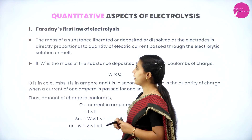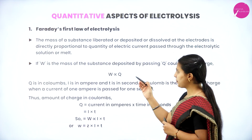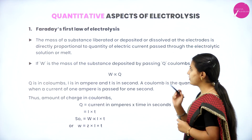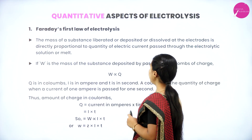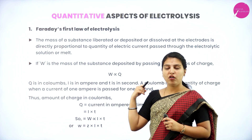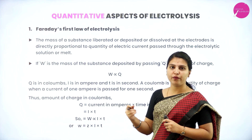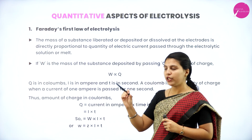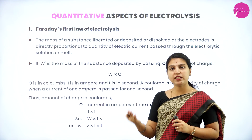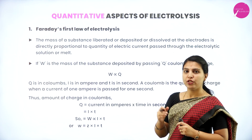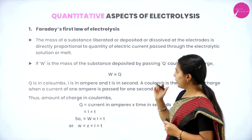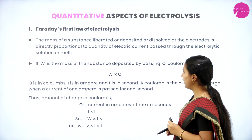Faraday's first law of electrolysis: The mass of the substance liberated, deposited, or dissolved at the electrodes is directly proportional to the quantity of electric current passed through the electrolytic solution or melt. That much electric current passed is equal to that much mass of substance liberated or deposited at the electrodes.